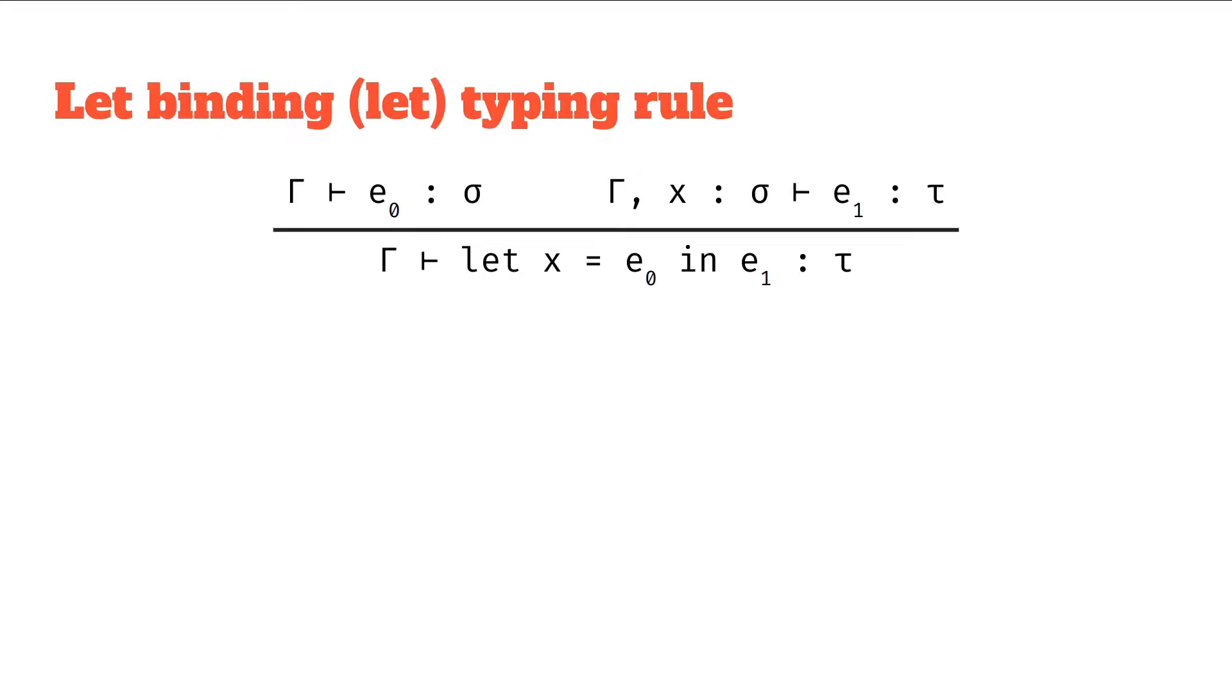So as with previous videos, let's have a look at the typing rule and break it down into its component parts. Let's start with expressions. We've got a few here: E0, some generic expression E0; x, some variable expression x; E1, another general expression; and then the actual let binding itself, which is let x equals E0 in E1.